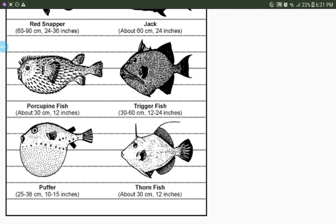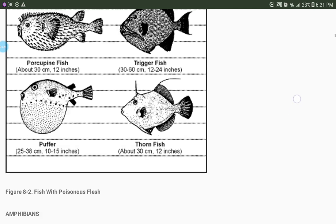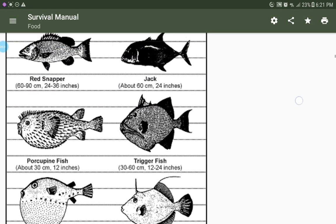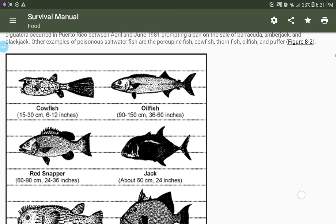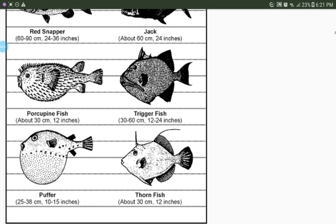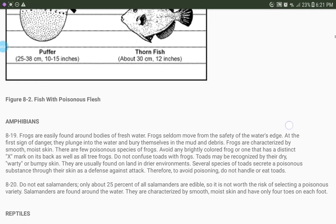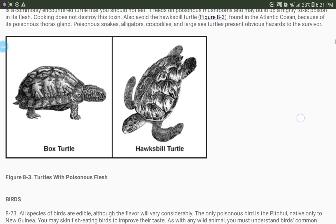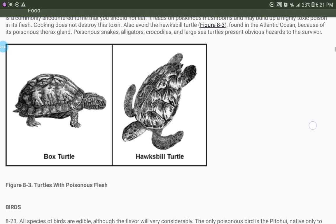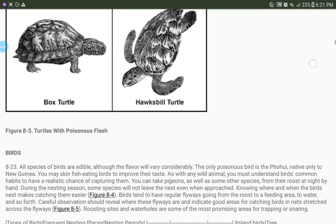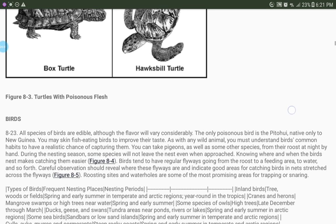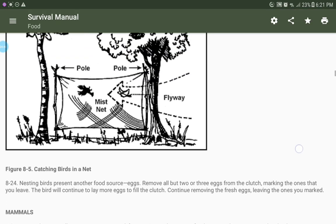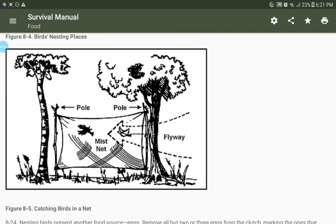And, porcupine fish and pufferfish. Thornfish, triggerfish, red snapper, jack, cowfish, and oilfish. I don't know about those. If you can eat that, yeah, these ones do have poisonous skin. But, here's another way to get it. To get food.